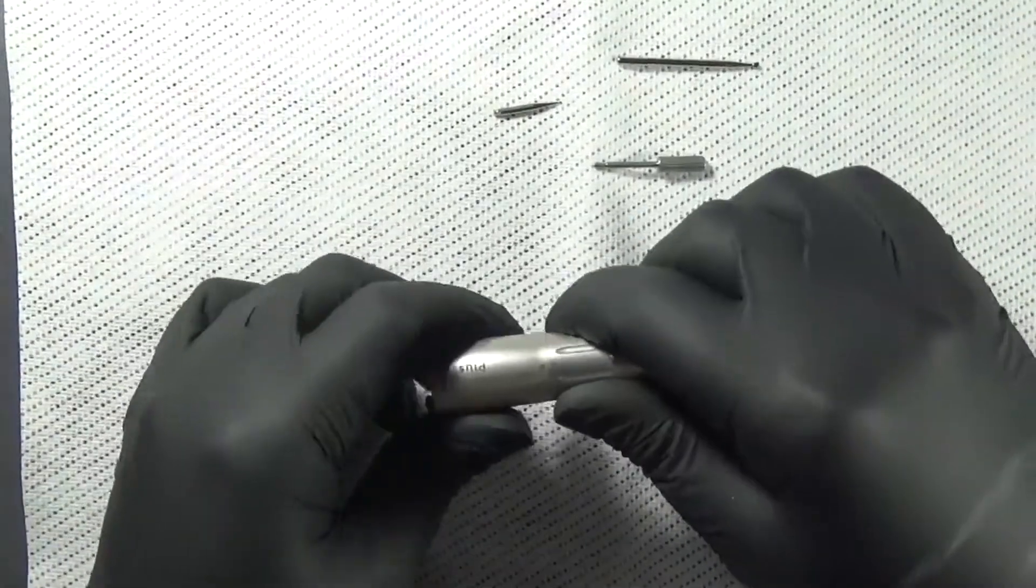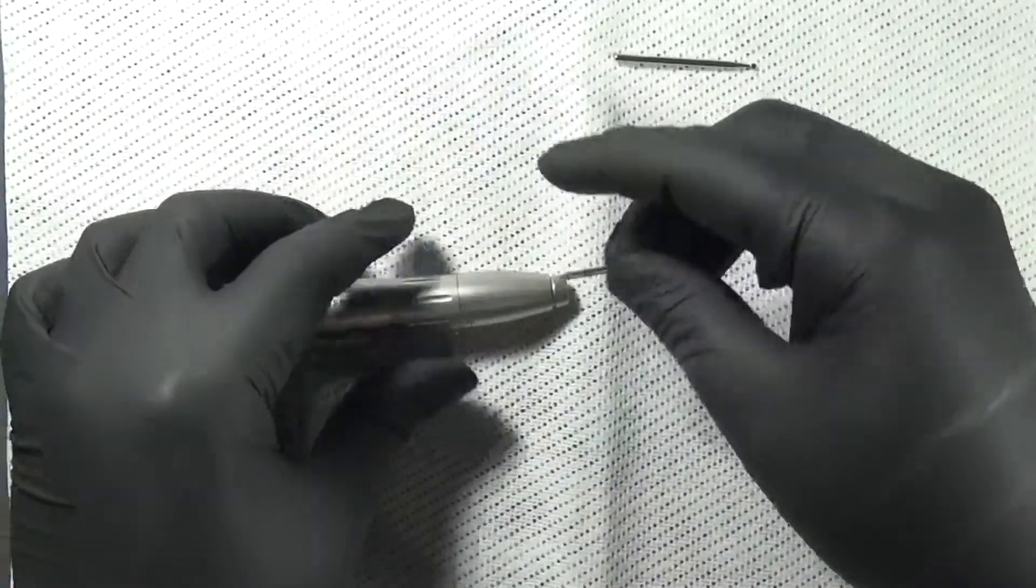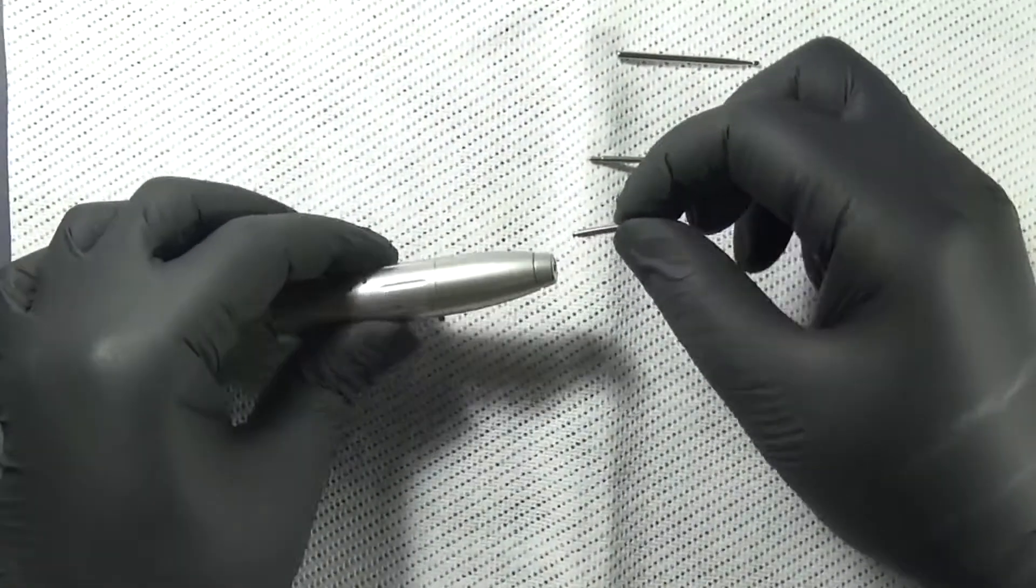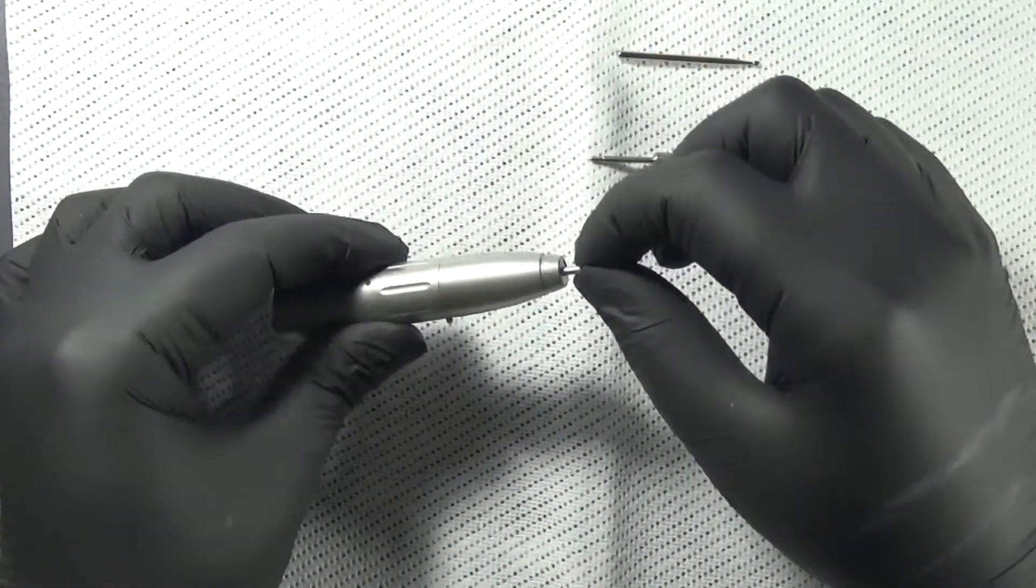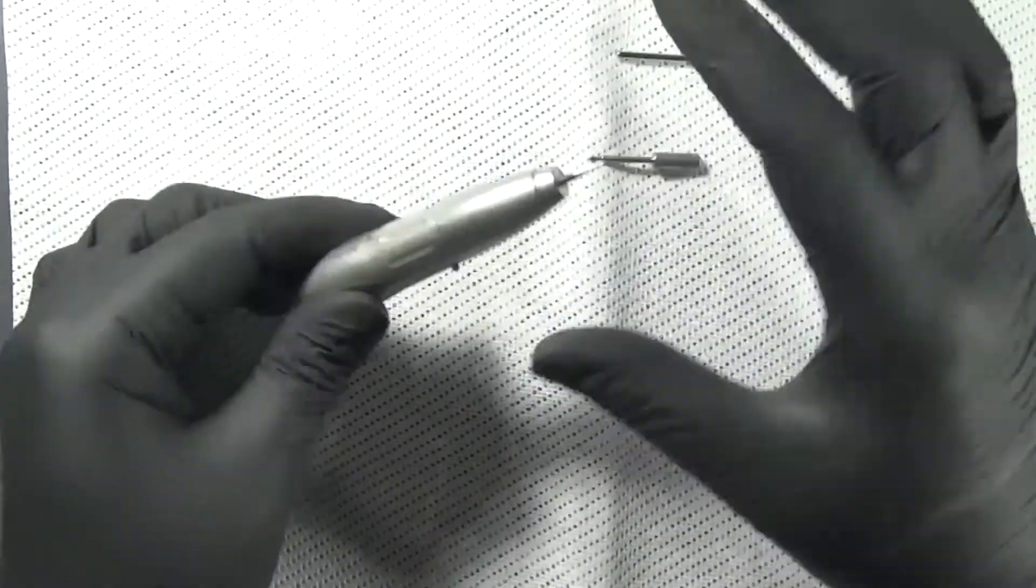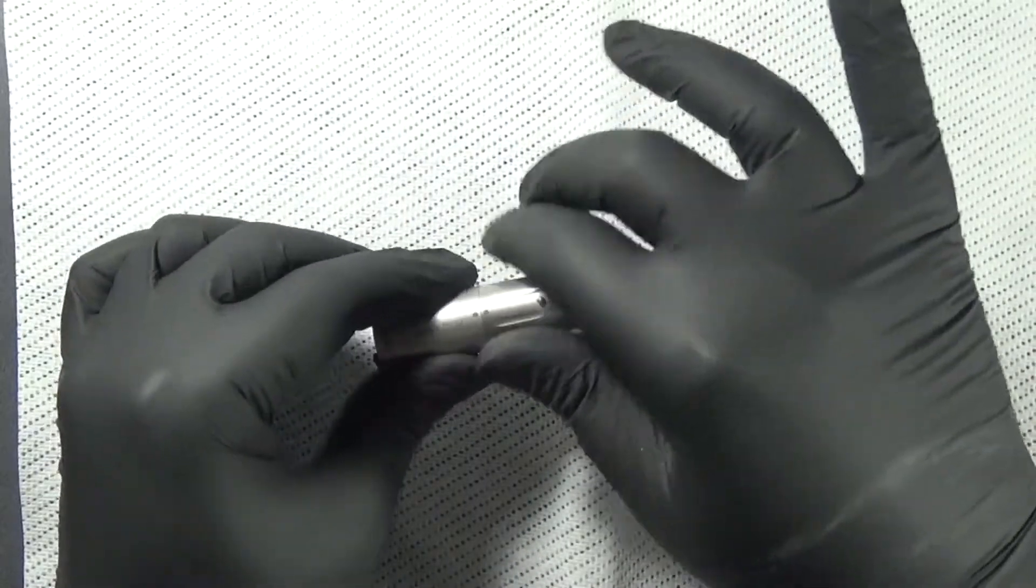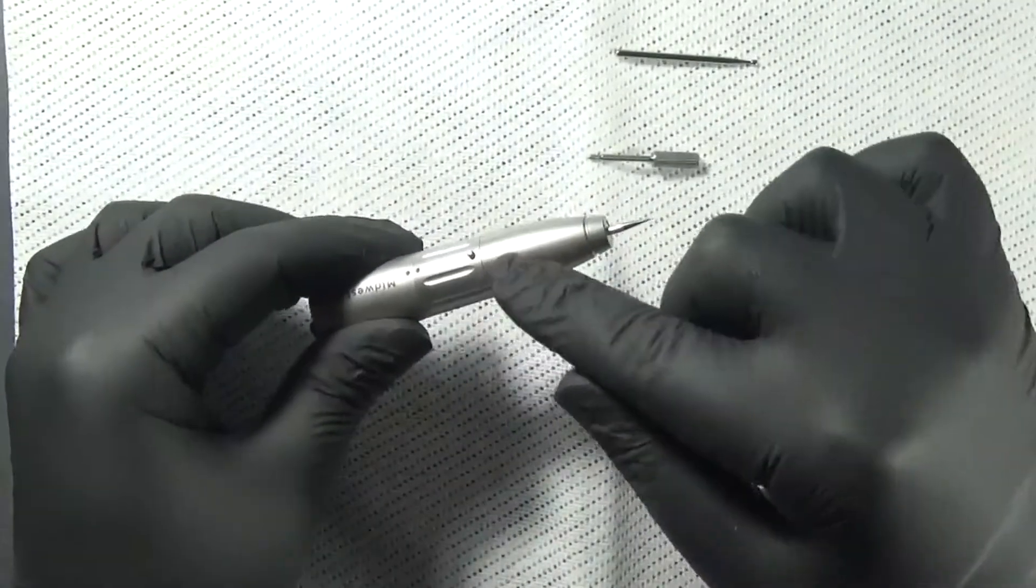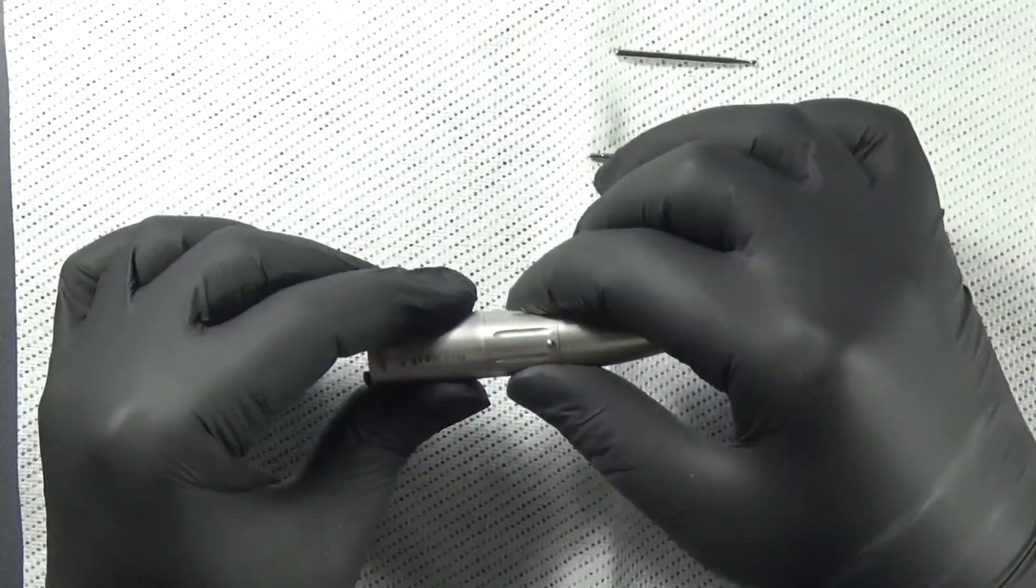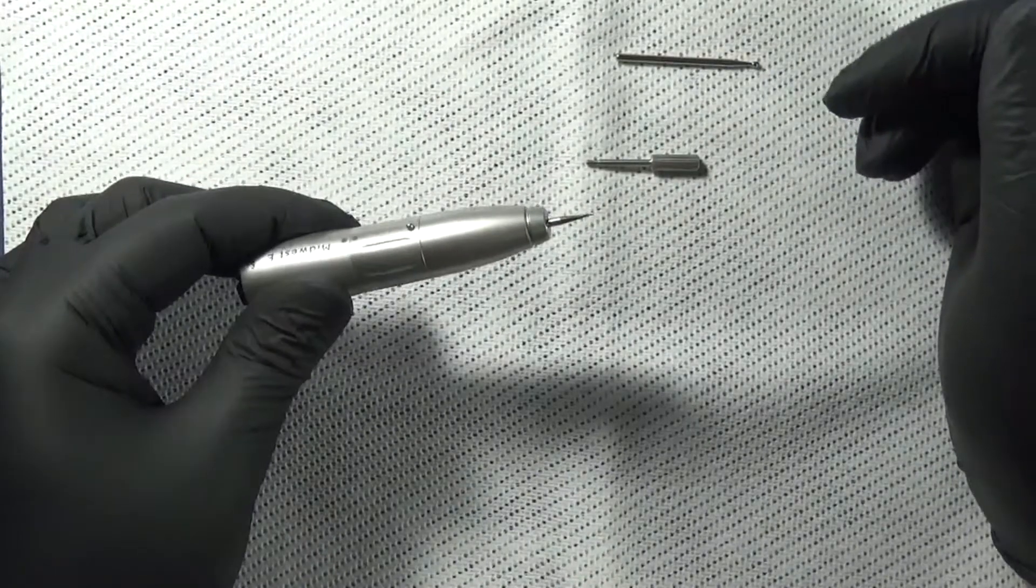We're going to open our chuck back up, two dots apart. We can take our latch type contra angle burr, insert it into the straight attachment fully seated. It'll hit that mandrel inside, the stop that acts as a spacer so it doesn't drop way down inside and we wouldn't be able to get that burr out. Turn your two dots in line to lock it, and that's locked in and ready to use.